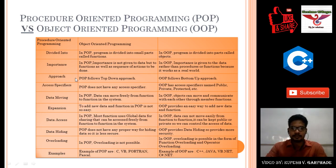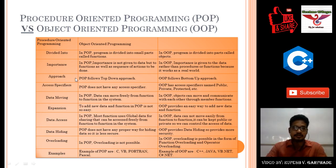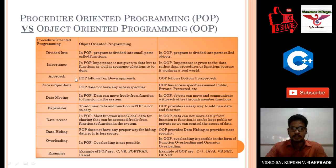Regarding data access: in procedure oriented programming, most functions use global data for sharing, which can be accessed freely from function to function. Global declaration means declaring outside the main function — that data is accessible to all. In object oriented programming, data cannot move easily from function to function; it can be kept public or private, so we can control the access of data using access specifiers.